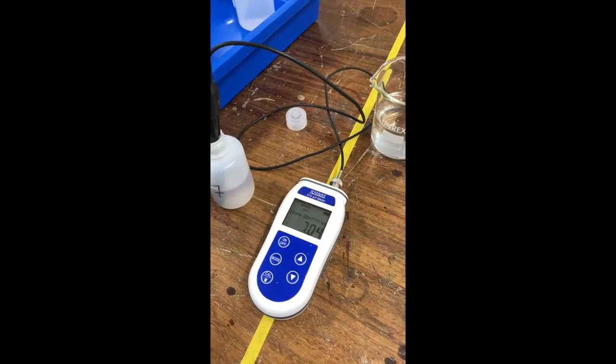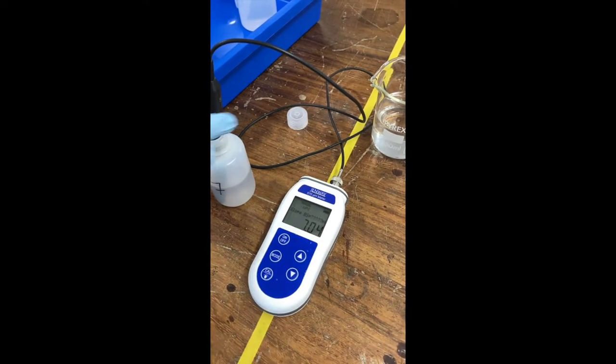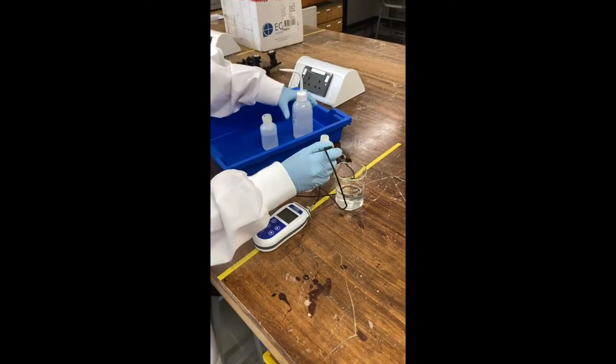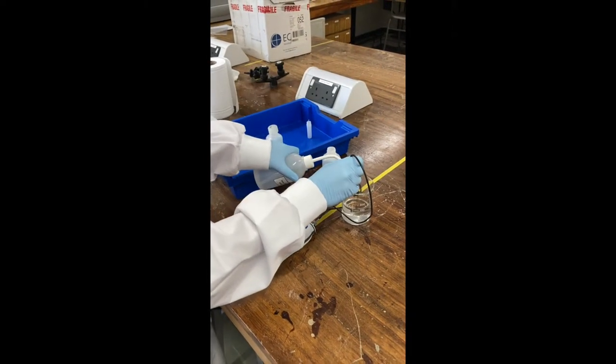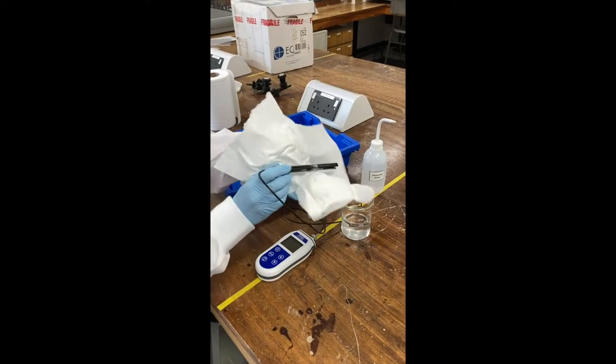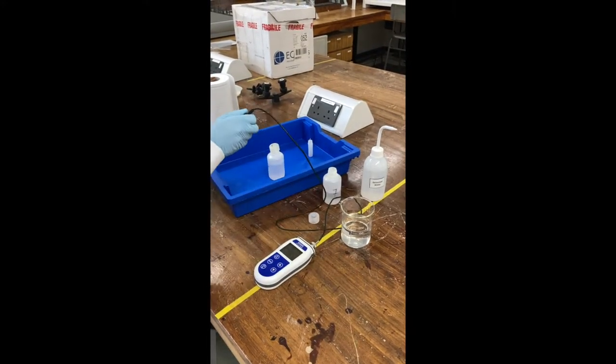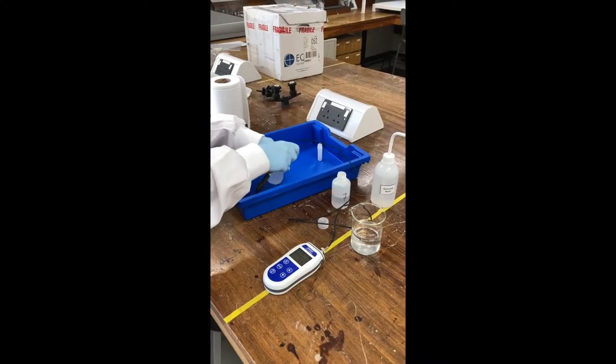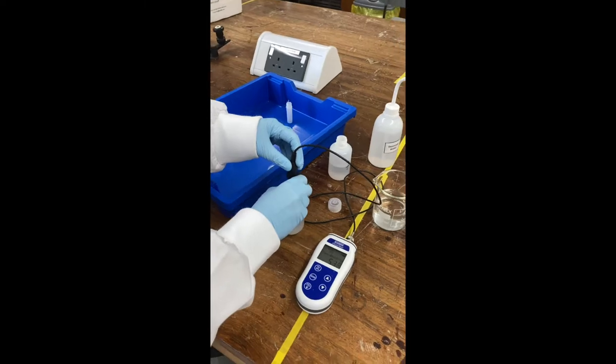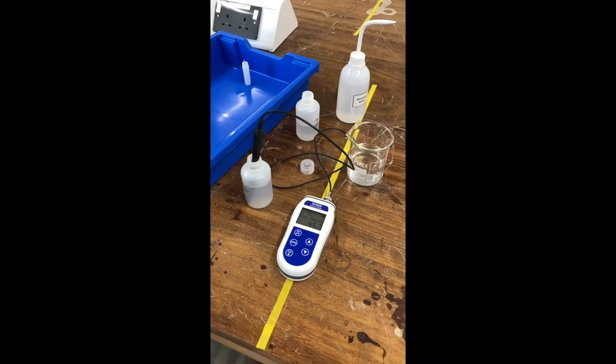You'll then need to do a slope, so that will either be a pH 4 or a pH 10, so follow the same procedure, removing the probe from the previous sample. Rinse it thoroughly and dry it with paper towel, and place the probe into your new sample. Give it a little mix and wait for the readings to settle.